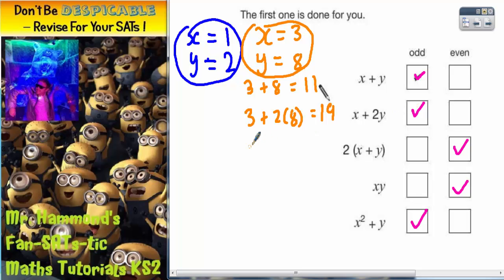The third statement is 2 lots of x plus y, which means we're talking about 2 lots of 3 plus 8. Well, always do the bracket first. So 3 plus 8 is 11. And 2 lots of 11 is 22, which is even. So we would still be ticking even.